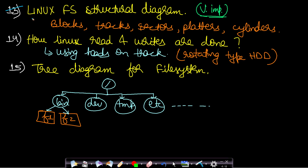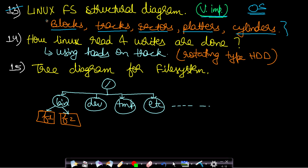The thirteenth topic is the Linux file system structural diagram, which is very important and similar to your OS concepts in the file handling part. You should read the diagrammatic representation — memory is represented in terms of blocks, blocks form tracks and sectors, and from that you can form platters and cylinders. This is a very important diagram and you should memorize it.